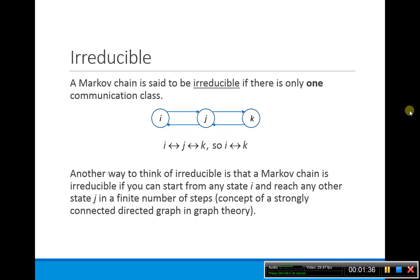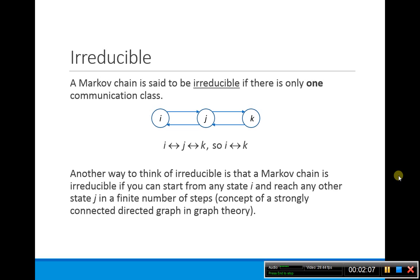In this example, I is accessible from J, J is accessible from I, so these two communicate. J is accessible from K, and K is accessible from J, so these two also communicate, which means that I and K also communicate. So all states I, J, and K communicate, so this is called an irreducible Markov chain.